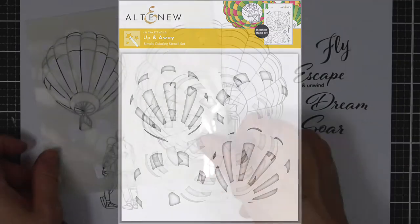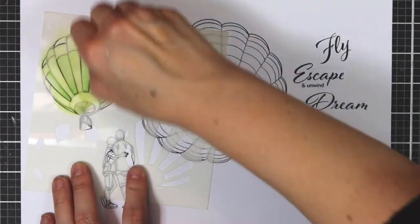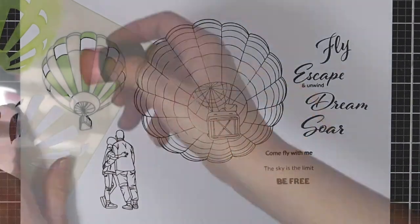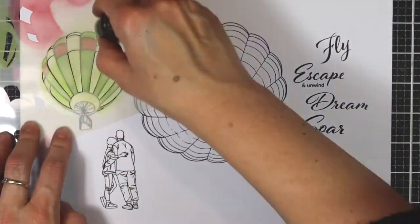This is Up and Away Simple Coloring Stencil Five-in-One from Altenew, which coordinates with the Up and Away stamp set. The stencil is part of a unique line of stencils curated to be used with their corresponding stamp sets.